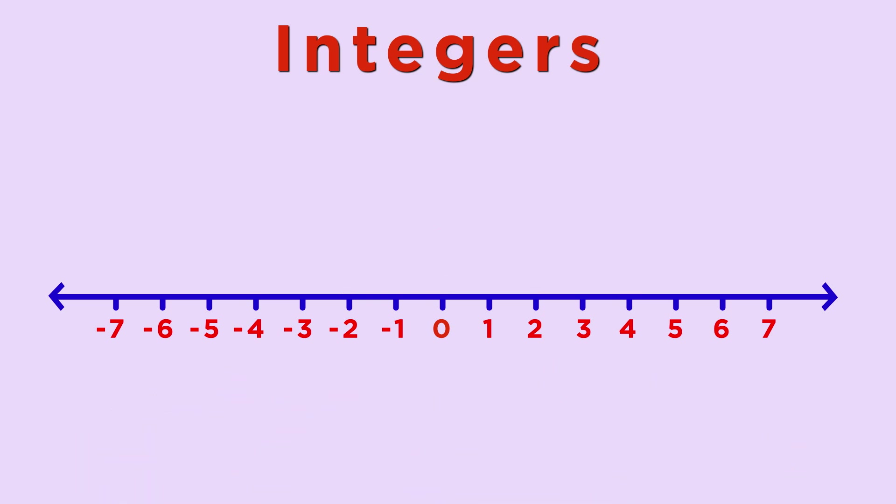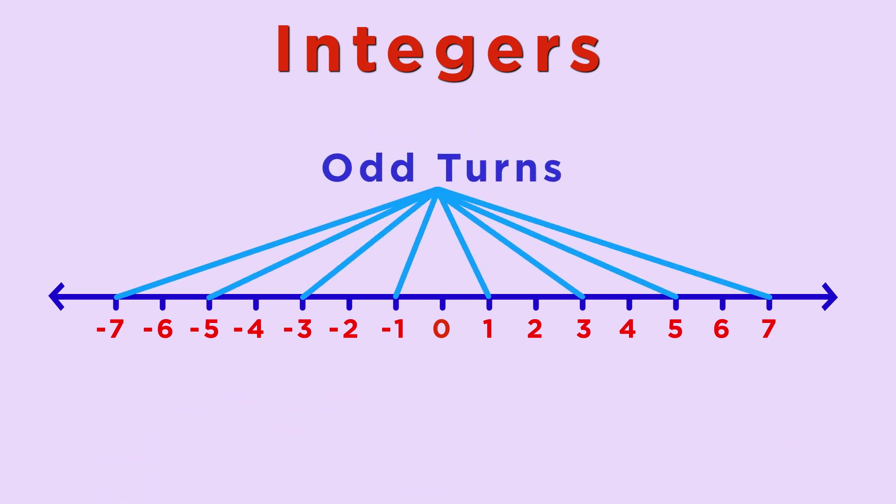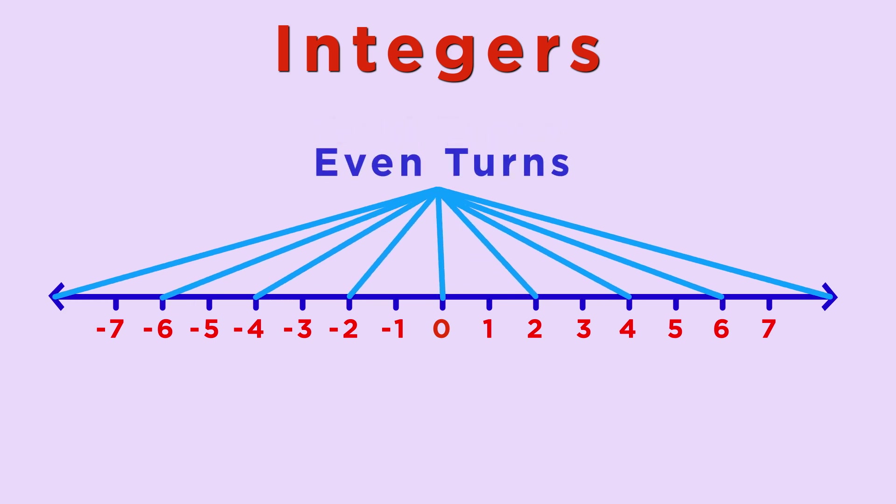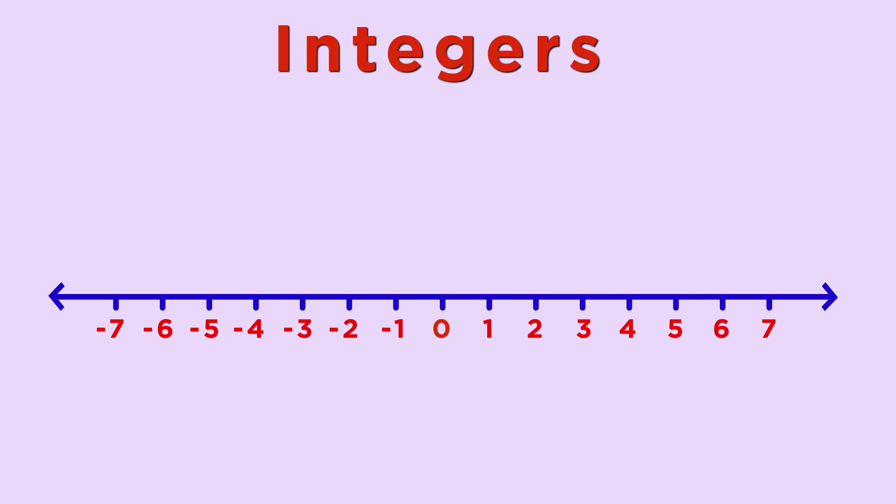Here's a few observations. First, on the odd turns, the random walk can only be on odd numbers, and on the even turns, it can only be on even numbers. Second, it mostly hovers around the middle, the number zero. But the longer you flip the coin for, the more it can spread out.